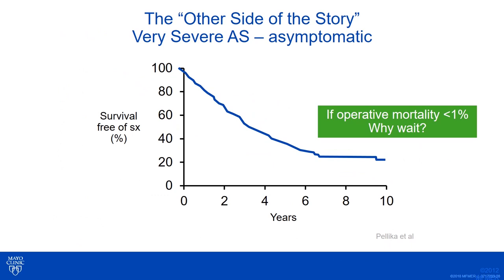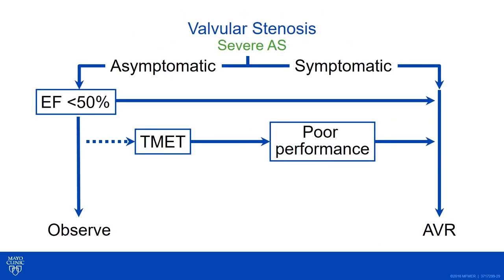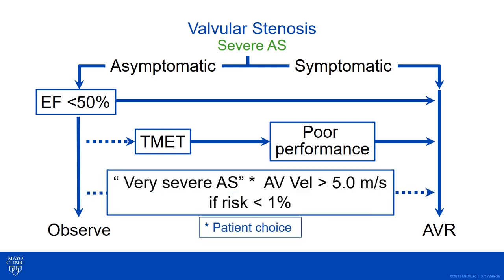Back to this algorithm: for patients with very severe AS, if you can offer them an intervention with very low procedural mortality and very high procedural success, that's another patient who could consider earlier operation even if asymptomatic. Lining all these up, these are the indications for intervention in patients with severe aortic valve stenosis: symptoms, low EF, poor exercise capacity, or very severe aortic valve stenosis.